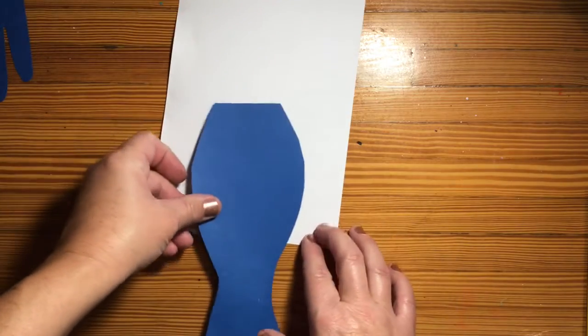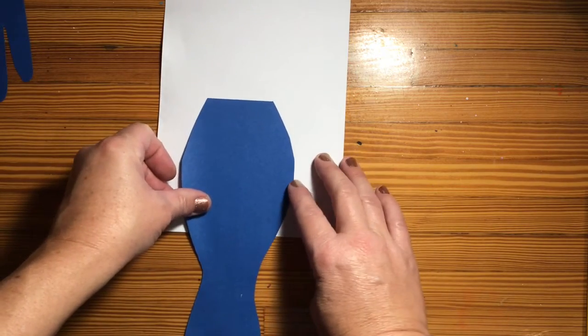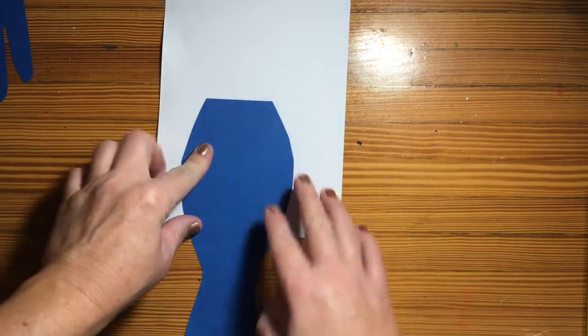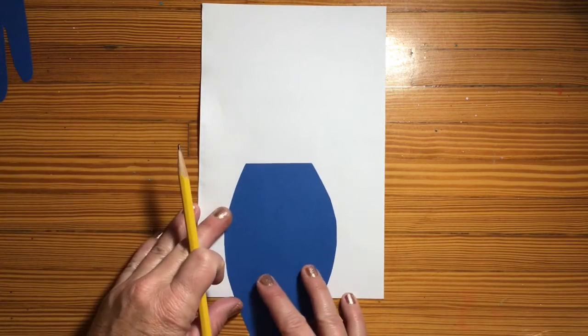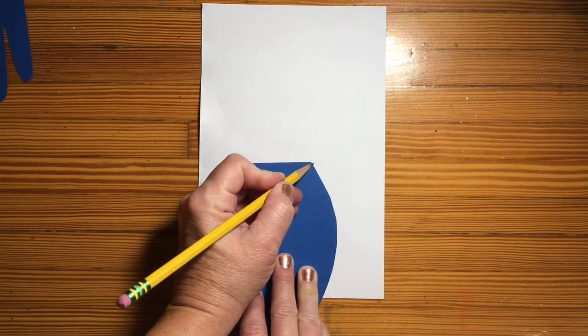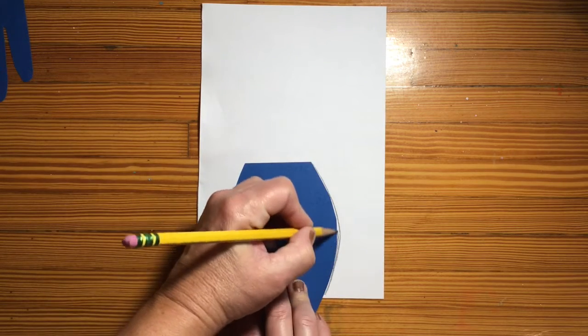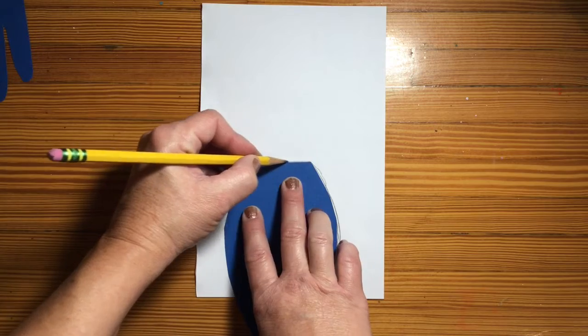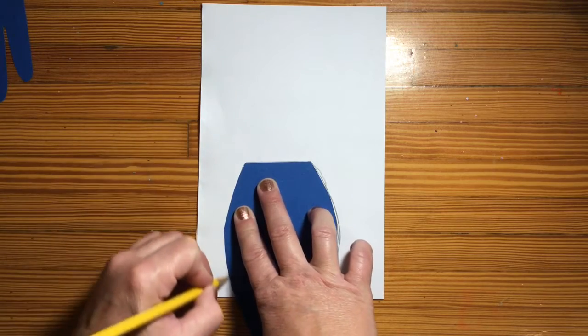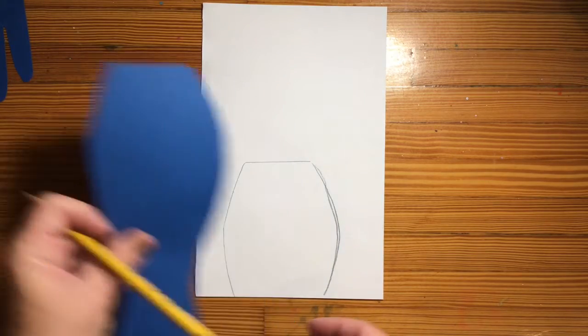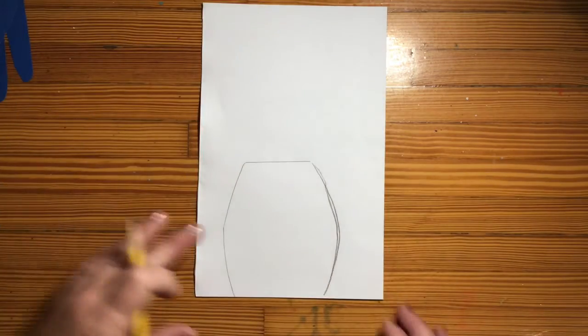What I want you to do is put this inside here, leave plenty of room on both sides. Take your pencil and you're going to trace. Set this to the side by those hands.